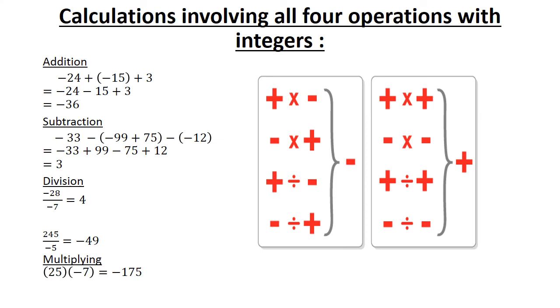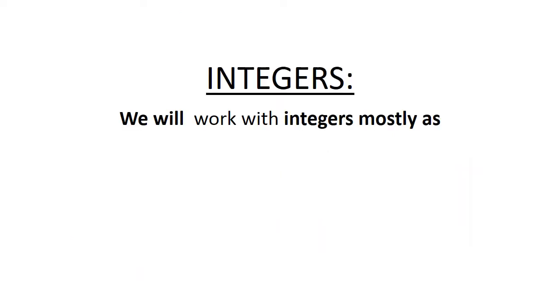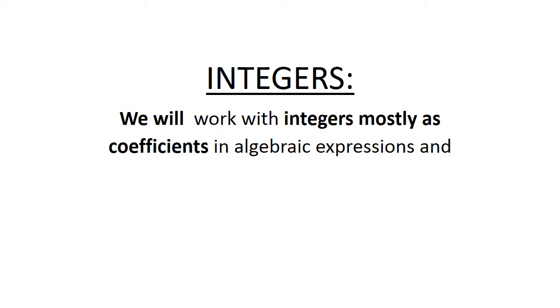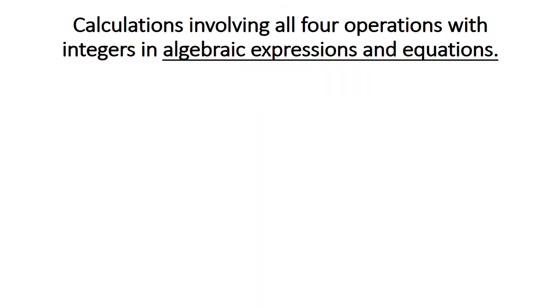Multiplying: in brackets, 25 times negative 7 equals negative 125. We work with integers mostly as coefficients in algebraic expressions and equations.